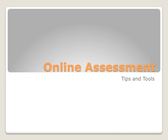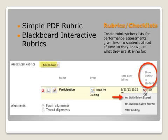This is three quick tips on online assessment and the tools that I use. One of the things I use is rubrics, and a rubric or checklist can help students with performance assessment. It gives them a chance to look ahead and know what they're striving for.